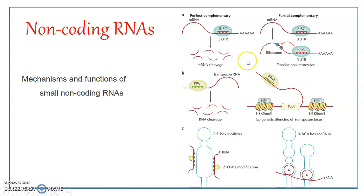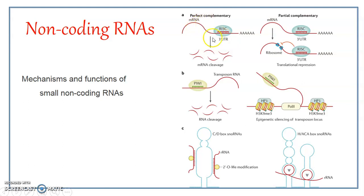Here you can see one of the non-coding RNAs — the miRNA — bringing about the cleavage of the mRNA transcript, or gene transcript. The mRNA is produced, and this is the complex form of the non-coding RNA with specific proteins. This complex brings about the cleavage of the mRNA, forming many mRNA segments which cannot undergo translation. This is done with the help of the siRNA or small interfering RNA.